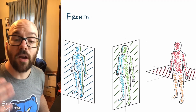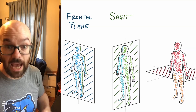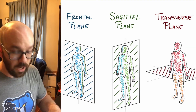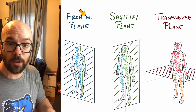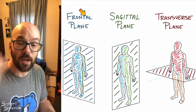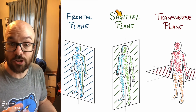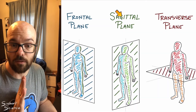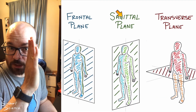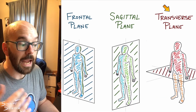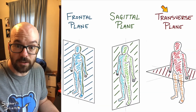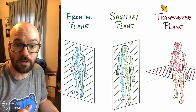Quick recap: we have three cross-sectional planes used to categorize different medical imaging cross-sections. The frontal plane, also called the coronal plane, divides the body front to back. The sagittal plane divides the body into left and right sections — mid-sagittal if it's right in the middle, regular sagittal if it's to the side. And the transverse plane cuts the body into superior and inferior sections.